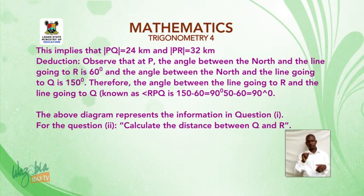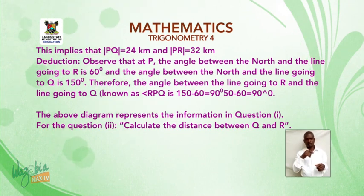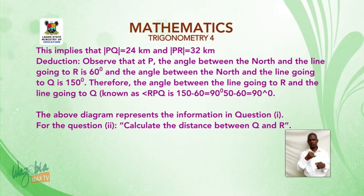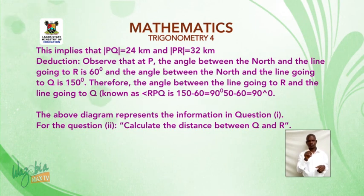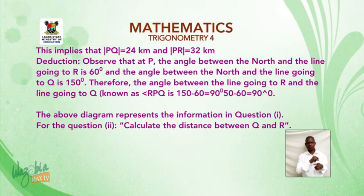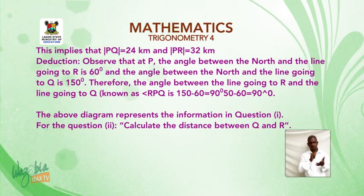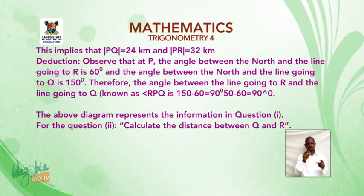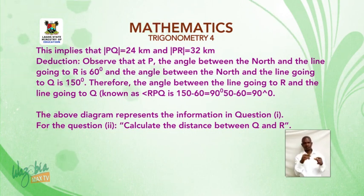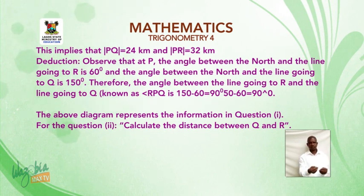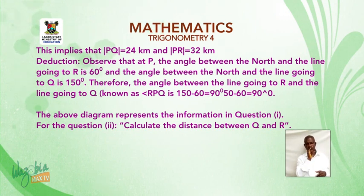We observe that at P, the angle between the north and the line going to R is 60 degrees, and the angle between the north and the line going to Q is 150 degrees. Therefore, the angle between the two lines — angle RPQ — is 150 degrees minus 60 degrees, which equals 90 degrees. Illustrating all of that in the diagram gives us the solution to part one.